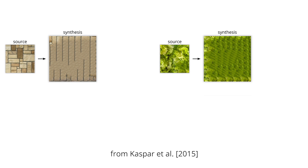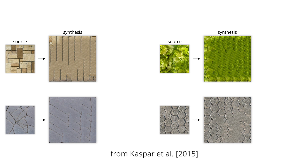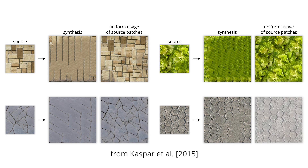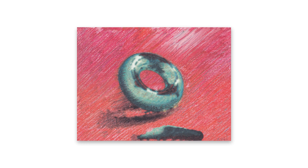Where earlier example-based synthesis methods were prone to artifacts such as over-smoothing and repetition, recent research pointed out that ensuring the example patches are used equitably removes these artifacts and improves the visual richness of the result. While this uniformity enforcement is straightforward for texture synthesis, in image synthesis with guidance significantly more complex than a discrete labeling, the desired utilization for each example patch becomes impossible to determine.